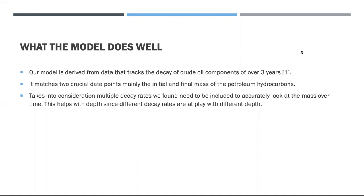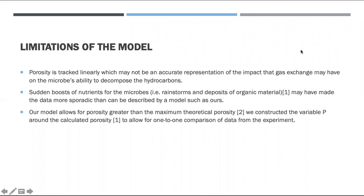And onto the limitations of the model. Porosity is tracked linearly, which might not be the most accurate representation of how gas exchange affects the microbial decay rate. Our model also allows for greater theoretical maximum of porosity, which, according to our source 2, we constructed variable P in order to achieve a one-to-one comparison with our data to the data from the experiment.